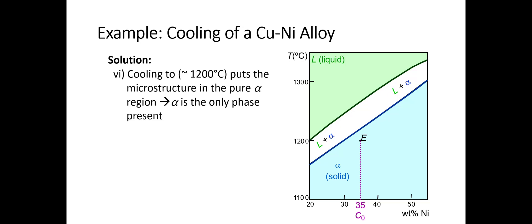Let's now cool down to 1200 degrees C. What that does is it puts the microstructure in the pure alpha region. Obviously alpha is the only phase present, which means that we can just read off the phase composition from the plot. It's obviously 35 weight percent nickel, and the phase amount is 100 percent, so all alpha. If we want to draw this, we would simply draw a bunch of grains here of the alpha phase.